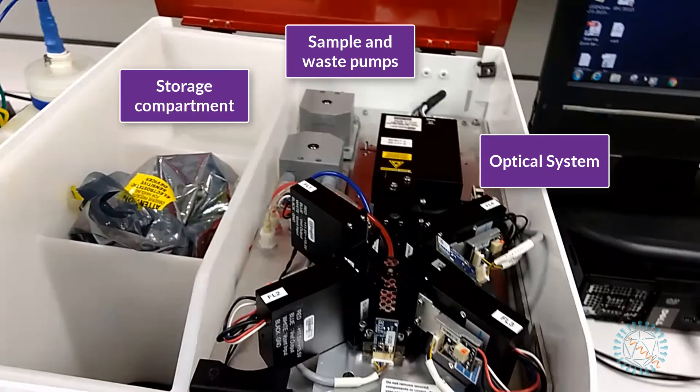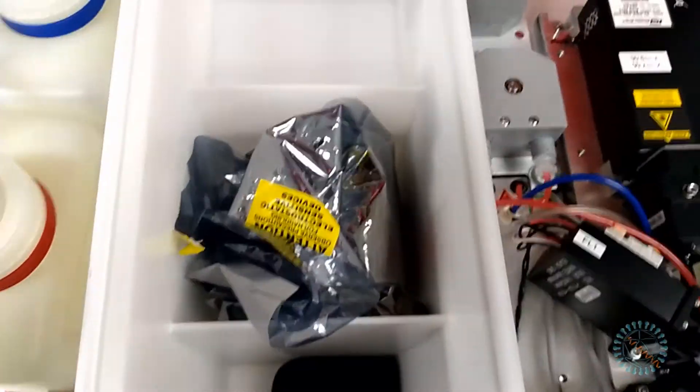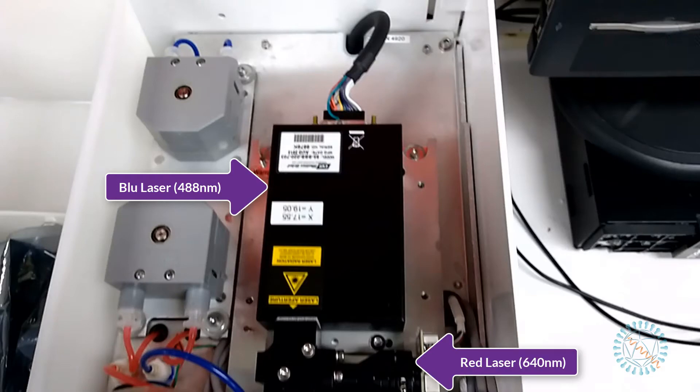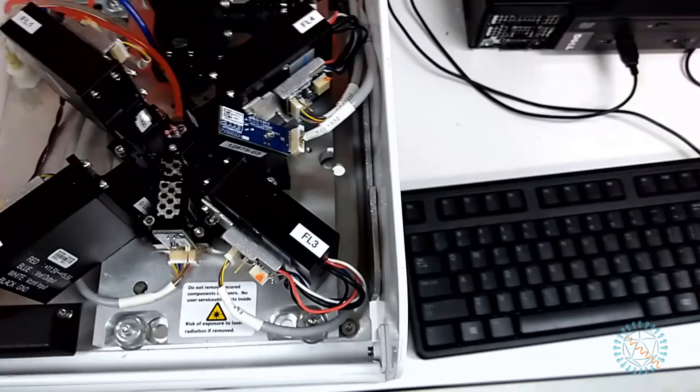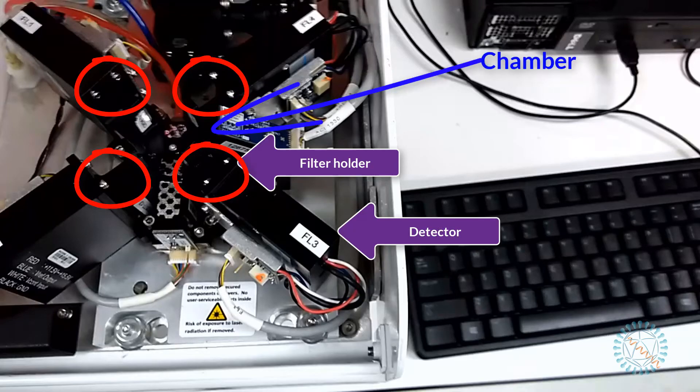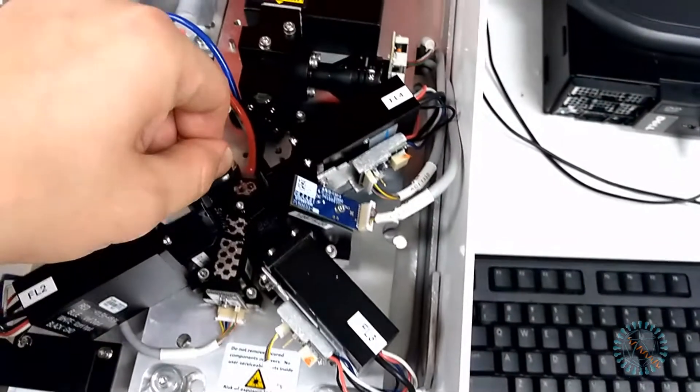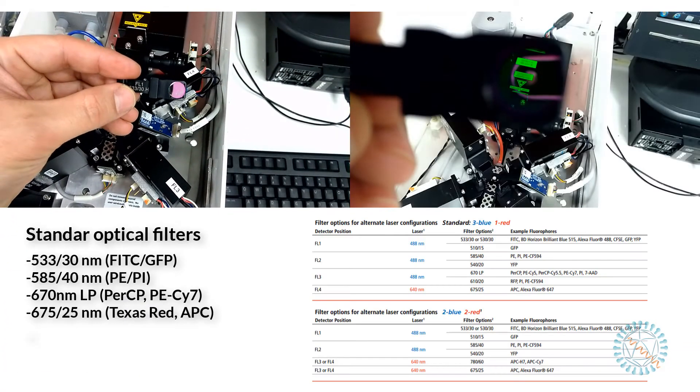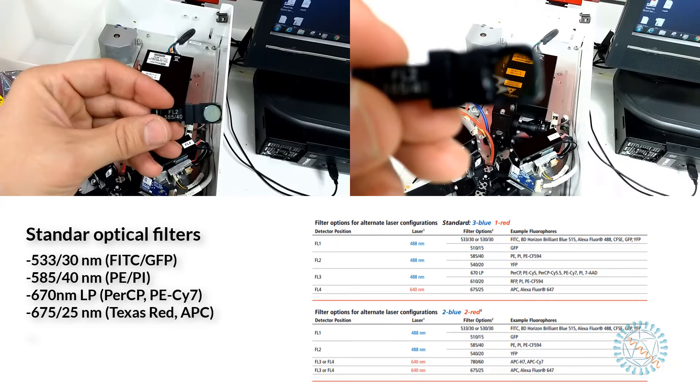By opening the top cover we can easily access a storage compartment, the rest of the fluidic system, and the optical system as well. The Accuri C6 is equipped with a 488nm blue laser and a 640nm red laser, both rated at approximately 20,000 hours of life. And also, as you can see, it can hold up to 4 different filters that are distributed around the measurement chamber. The optical filters are small and can easily be removed by hand without the use of tools. They come in a large variety of bandwidths and center wavelengths.